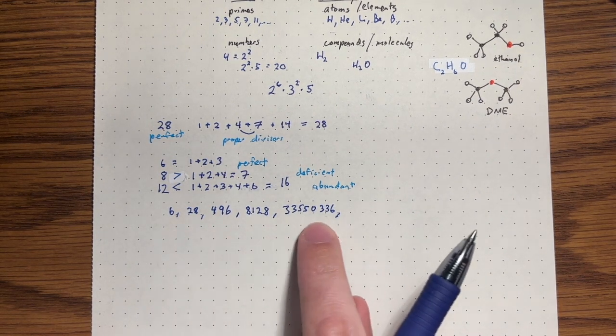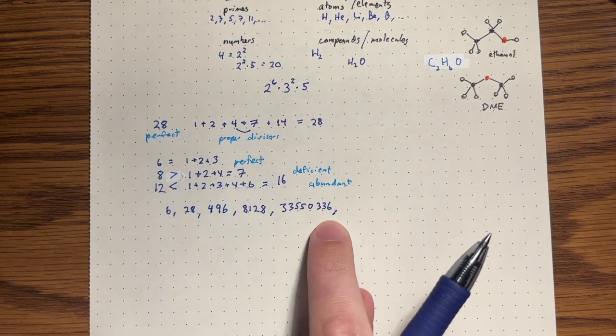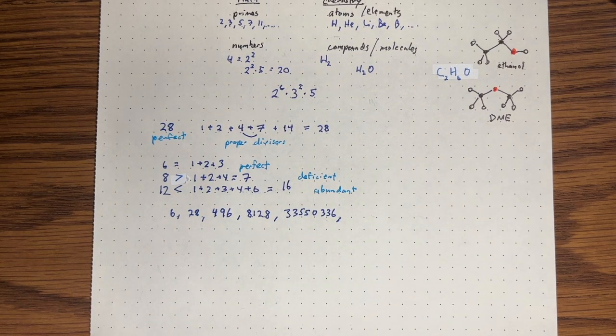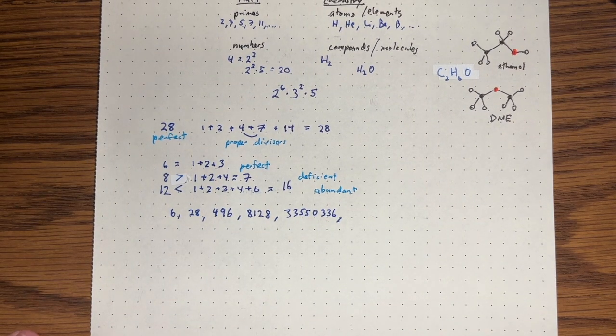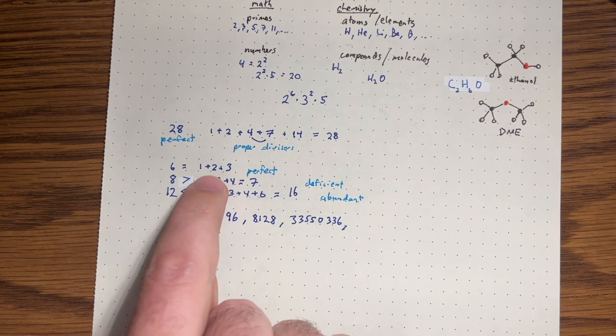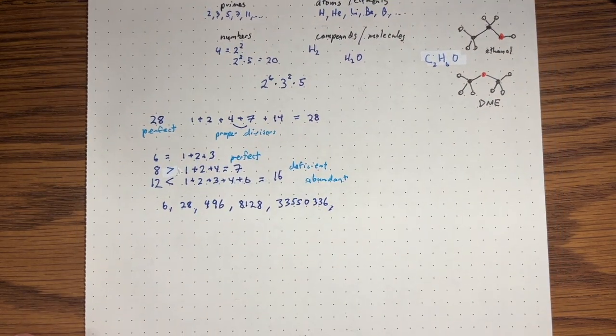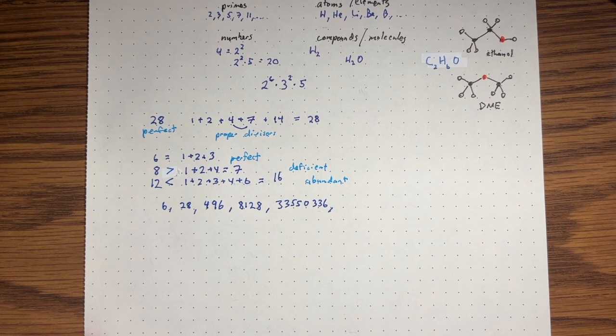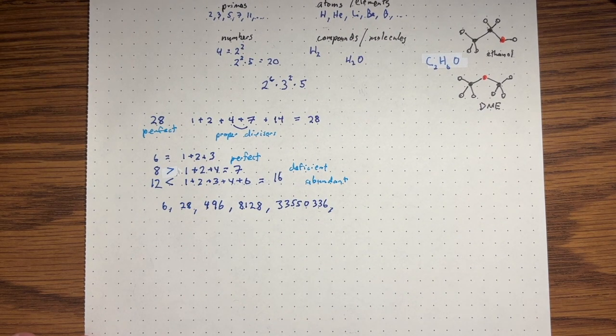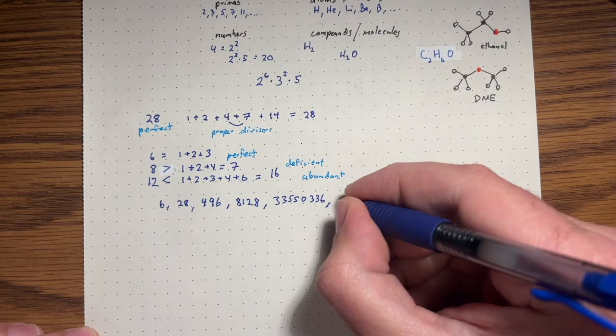There are only five up to here. These are extremely rare. It's very hard to get exactly the number itself on the nose when you sum up its proper divisors. And this brings up a really interesting question. So what if we continue this list?